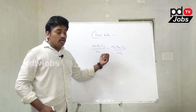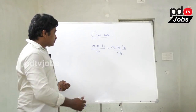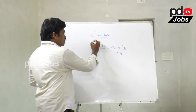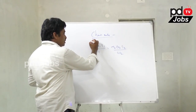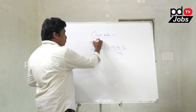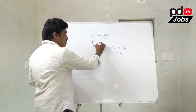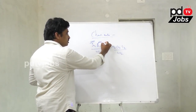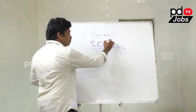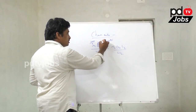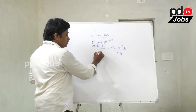This is the formula. M1 means number of men, D1 means number of days, T1 means time in hours.